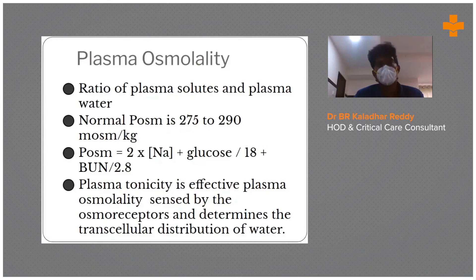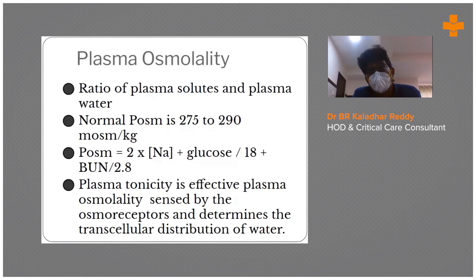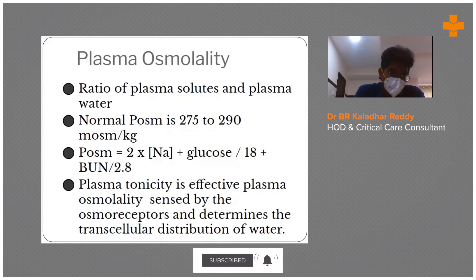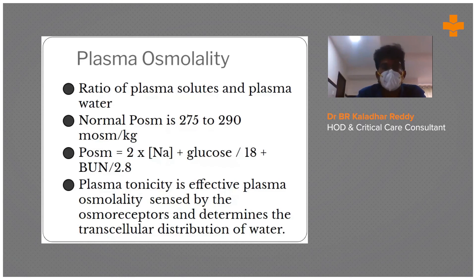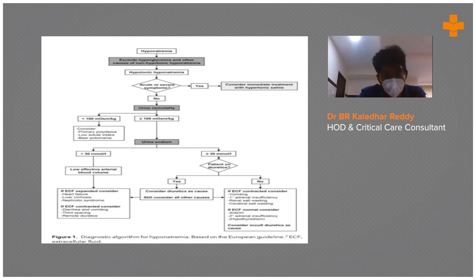The plasma osmolality formula is: 2 × sodium + glucose/18 + BUN/2.8. Once you check plasma osmolality, also check urine osmolality. If your lab doesn't provide urine osmolality, you can use the urine routine specific gravity — the last two digits multiplied by 10 gives you the approximate urine osmolality.